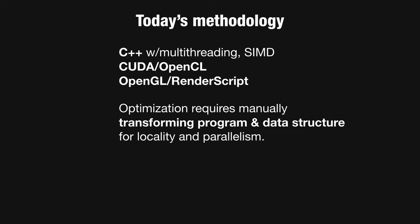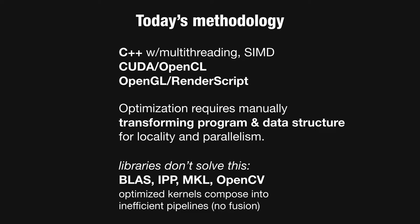This often requires rewriting all of our code in the process. And critically, building on optimized libraries like OpenCV and Intel Performance Primitives isn't enough either. While the individual operations in these libraries may be highly optimized, individually optimized kernels still compose into inefficient pipelines on modern machines, since they can't interleave multiple stages for locality across function calls. We show several times in our linked code examples how we can outperform OpenCV by up to six times in even relatively simple pipelines, using code that's simple enough to write in just a few minutes and a few tens of lines.